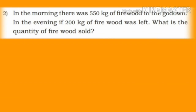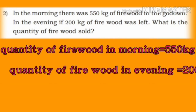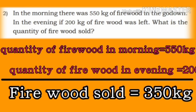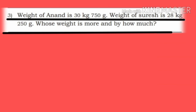Second problem: In the morning there was 550 kg of firewood in the godown. In the evening, 200 kg of firewood was left. What is the quantity of firewood sold? Quantity in the morning: 550 kg. Quantity in the evening: 200 kg. Firewood sold: 550 minus 200 equals 350 kg.